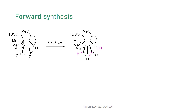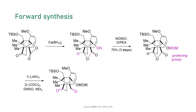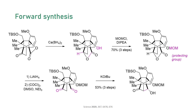To avoid any interference during subsequent functionalizations, they protected the alcohol with MOM chloride. They still had to solve the original task — namely construction of the all-carbon-based framework of Canataxpropellane. To this end, they reductively opened the lactone and oxidized both alcohols in the intermediate using Swern conditions. This ketoaldehyde then underwent an intramolecular aldol reaction, re-establishing the cage-like core, as well as putting the ketone and the secondary alcohol in place that are present in the target natural product.